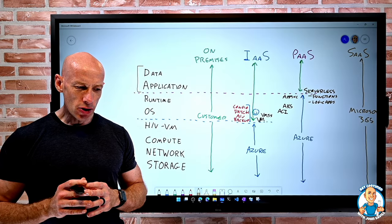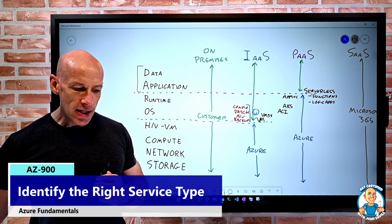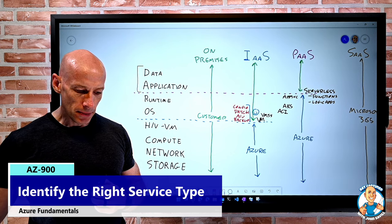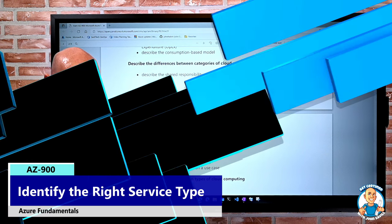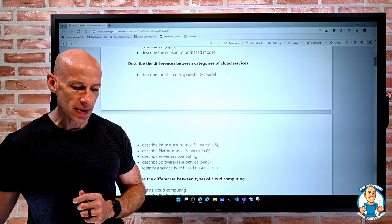In this lesson, I want to look at identifying the right service type based on a particular use case. If we look at the skills assessed, we're really just looking at the last one in this category. We're looking at this idea of identify a service type based on the use case. So we're going to dive into that particular skill.